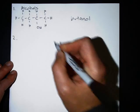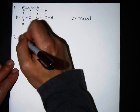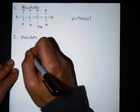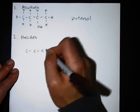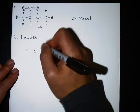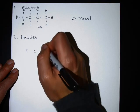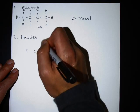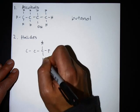Unfortunately, the next ones are called halides. Halides look very similar except instead of having an H or an OH, they're going to have a different functional group — like an F for fluorine.